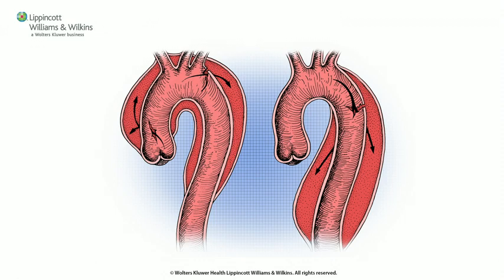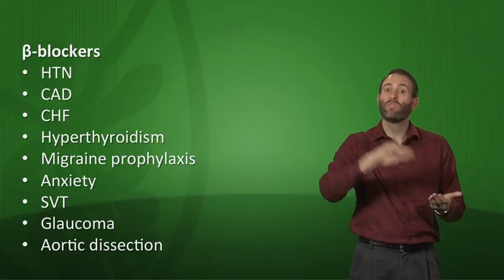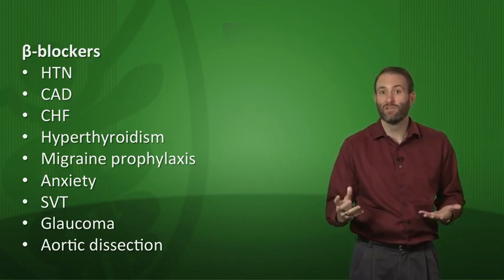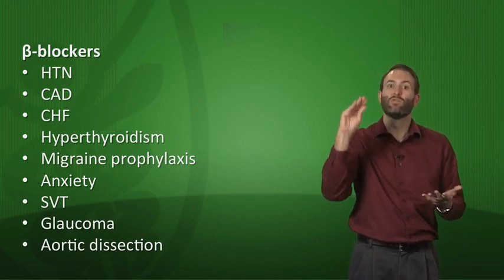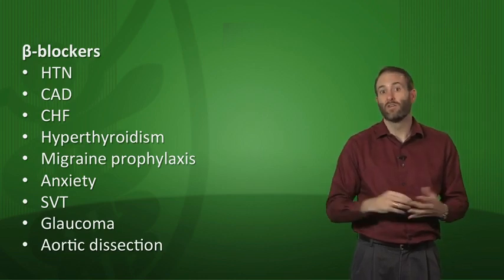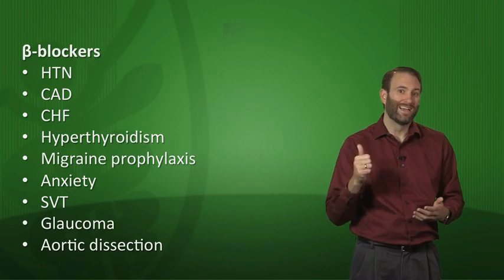You need to lower blood pressure first to prevent aortic dissection from getting worse, but you don't just reach for any drug. You reach for a beta blocker because beta blockers not only decrease blood pressure, they decrease the slope of the rise of blood pressure. It's not just the high blood pressure making the dissection worse — it's that rapid increase in BP during each beat of the heart. That's why beta blockers are the antihypertensive drug of choice for aortic dissection.